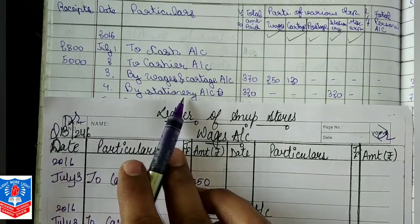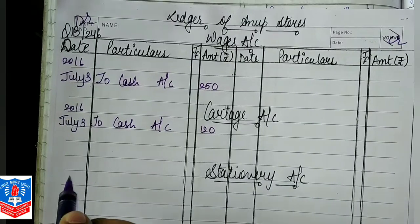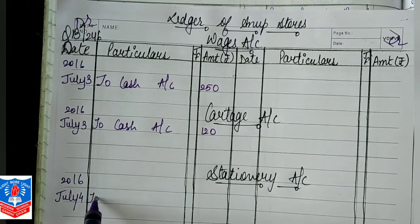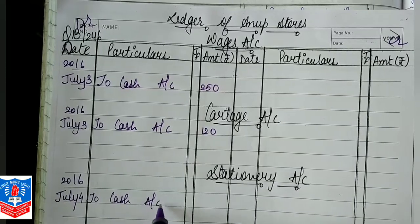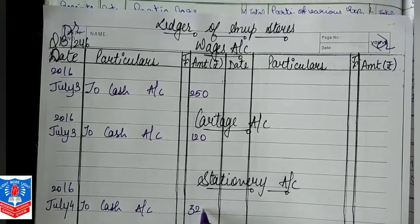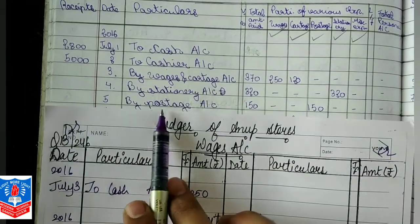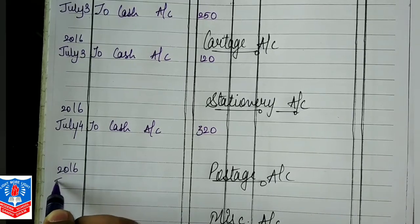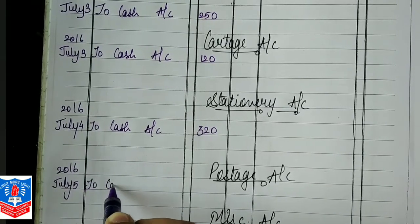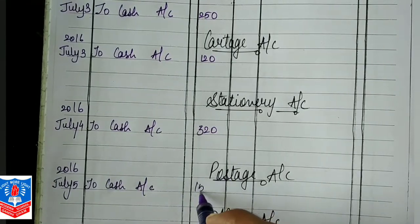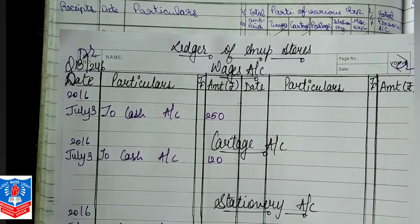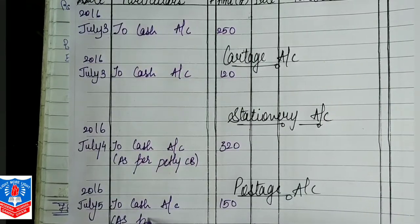Moving further, on date 4, it is stationery. In the stationery account you will write: 2016, July 4, To Cash Account, and the amount is 320. Next is 5th date, postage 150. You will pick the postage account on the debit side, 2016 July 5, To Cash Account, 150 — and you will write as per petty cash book.